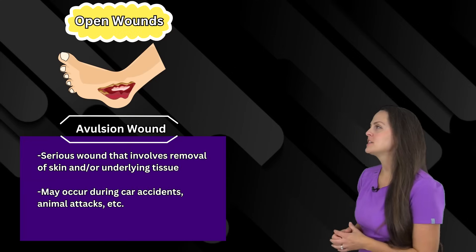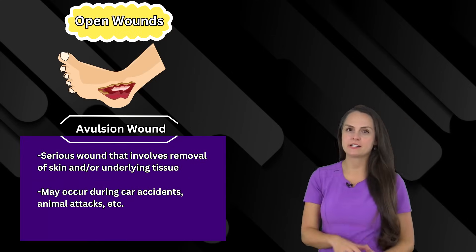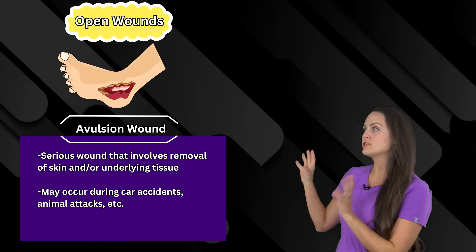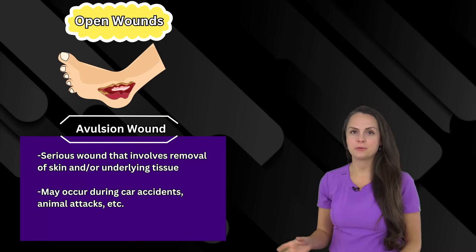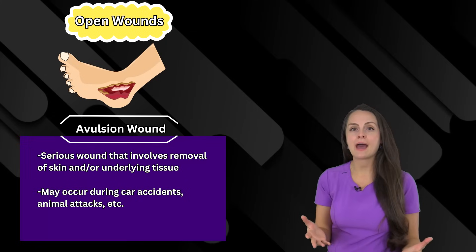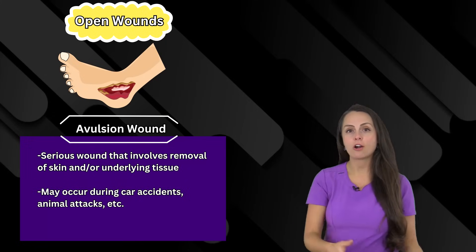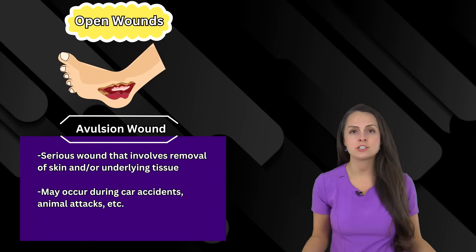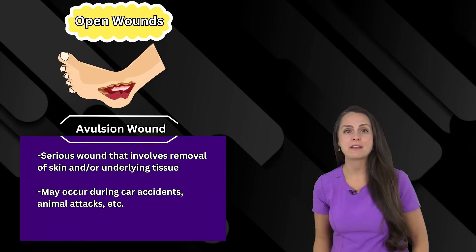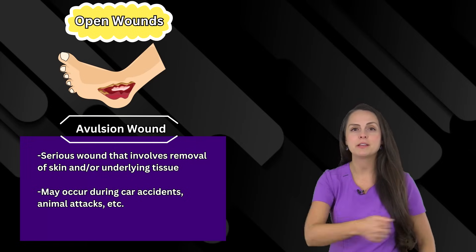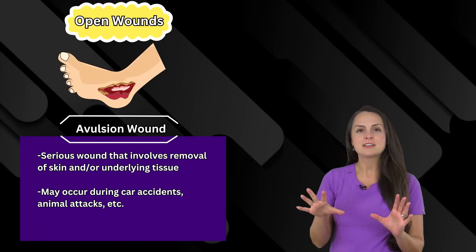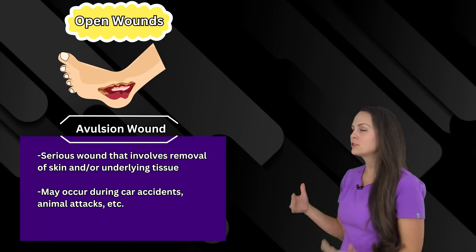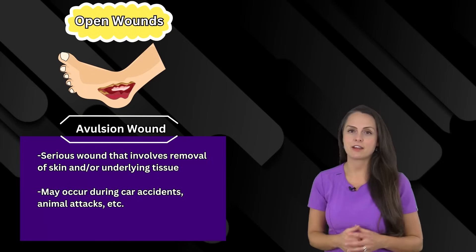Then there's avulsion, and this type of skin wound is pretty serious because we are actually removing skin and its underlying tissue. This can happen in a severe car accident or some type of animal attack — imagine a bear ripping off some of your skin. With this type of wound, it carries a high risk of infection.